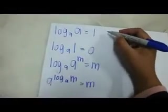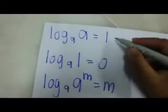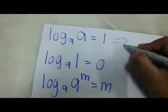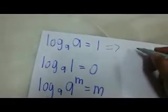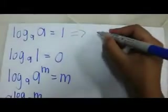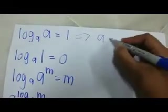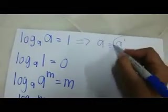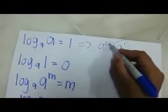First, log A base A is equal to 1. It can be like this. By using the first law of indices, A is equal to A to the power of 1. A to the power of 1, A is equal to A. So that is why this is we get this kind of properties of logarithm.